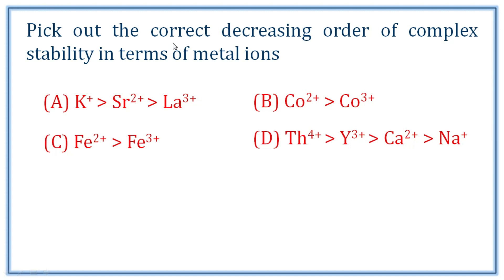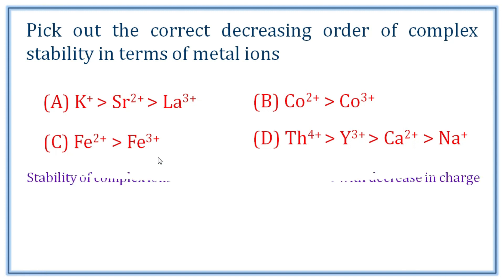Next question: pick out the correct decreasing order of complex stability in terms of metal ions. The important factor affecting stability is the size and charge of the metal ion. The compounds given include potassium, strontium, and lanthanum — these are three comparably sized ions. We then check charge. For indium In3+, comparable size applies as well. Cobalt compounds are also comparable in size.